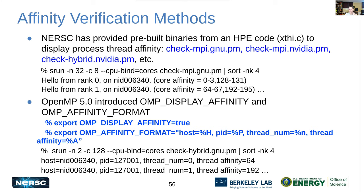NERSC provides multiple tools to verify that CPU affinity is working as intended. There are pre-compiled binaries you can run that report where your ranks are placed and what the affinity settings are. If you're using OpenMP 5.0, which several compilers support, you can set specific environment variables to get detailed thread affinity output when you run your code.